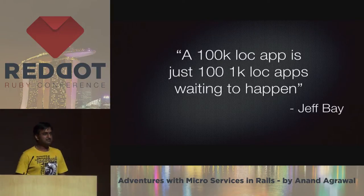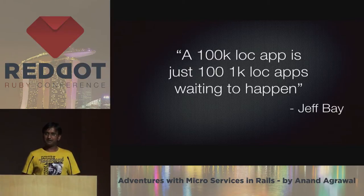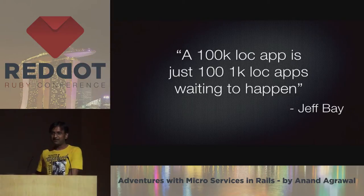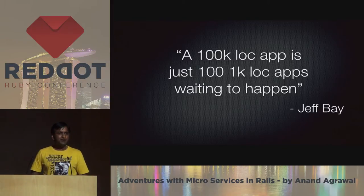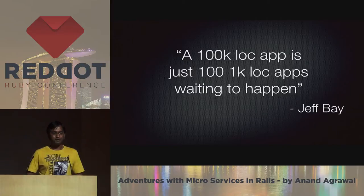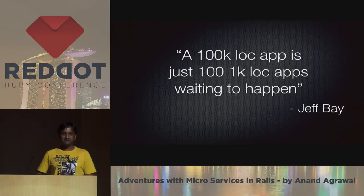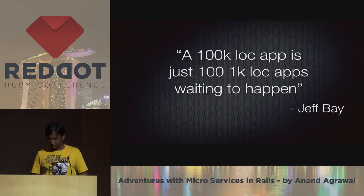As Jeff Bay says, a monolithic application which is 100K lines of code is nothing but 100 one-K line applications waiting to happen. He uses the 1K line of code as a parameter for a microservice. But you get the idea — rather than having a big monolithic application, break it down into smaller pieces so that it's much more manageable.